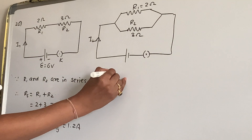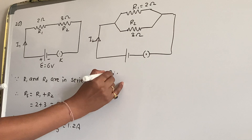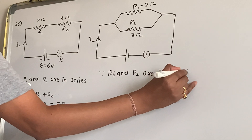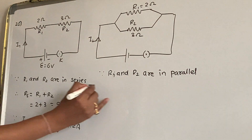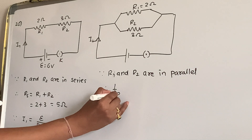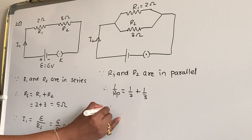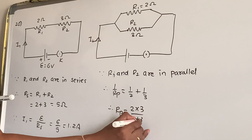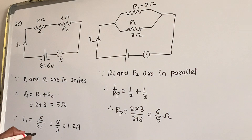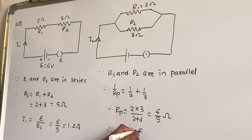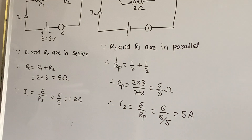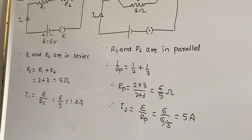Now R1 and R2 are connected in parallel: Rp = (2 × 3) / (2 + 3) = 6/5 ohm. So I2 = EMF / Rp = 6 / (6/5) = 5 A. That's it for this video. We will continue in the next lecture. Thank you.